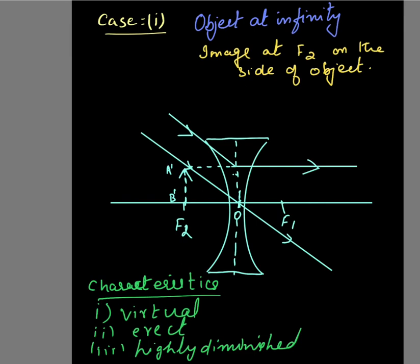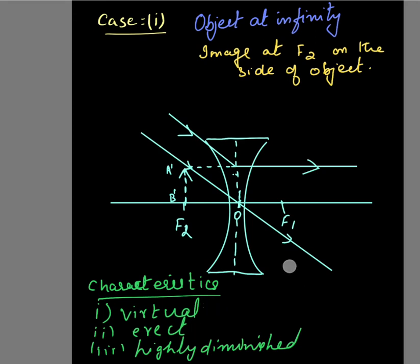To conclude Case 1: when the object is at infinity, the image is formed at F2, on the same side as the object. The characteristics of the image are: it is virtual, because it results from tracing back the refracted rays; it is erect; and the size of the image is highly diminished.